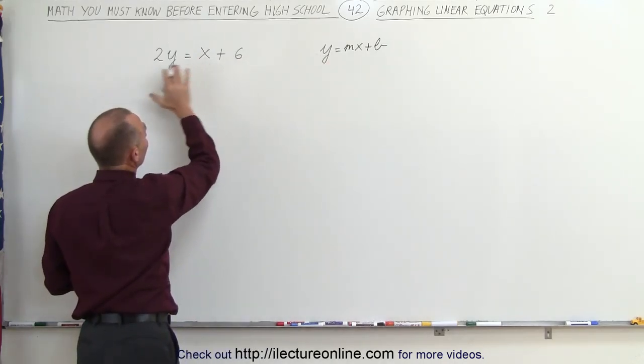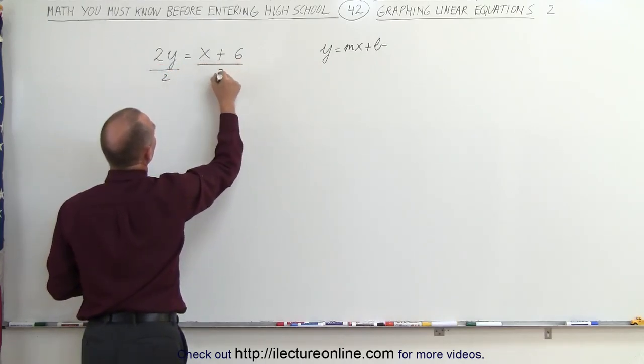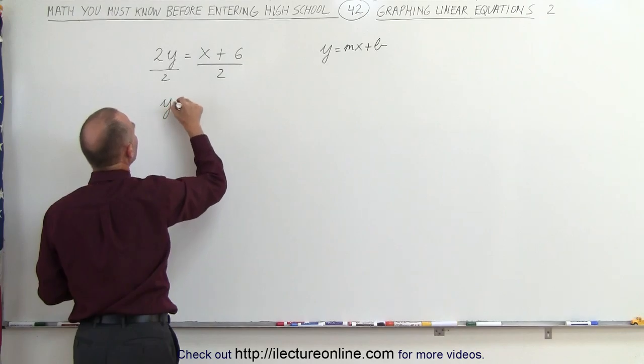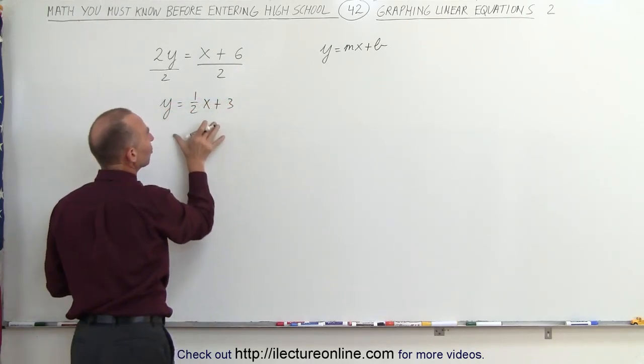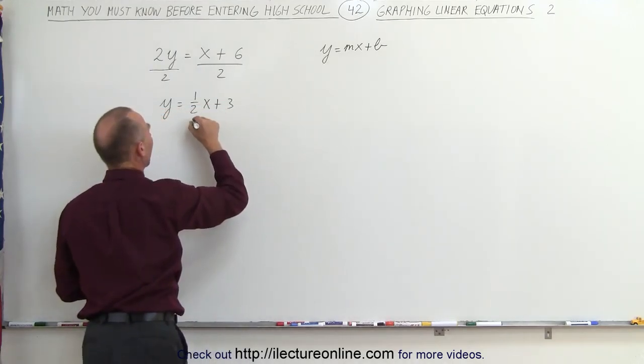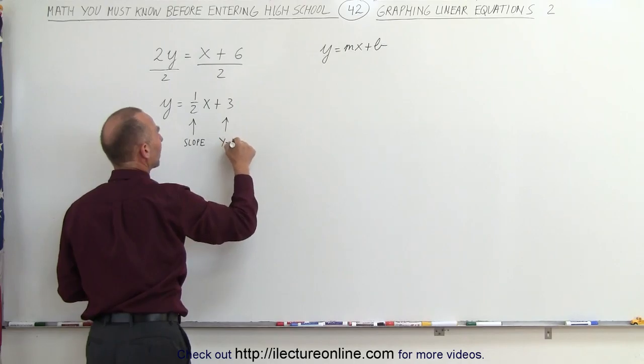That means we have to divide both sides of the equation by 2. We divide the left side by 2, we divide the right side by 2, and this gives us y equals 1 half x plus 3, which is exactly what we have over here, which means the 1 half represents the slope, and this number here represents the y-intercept.